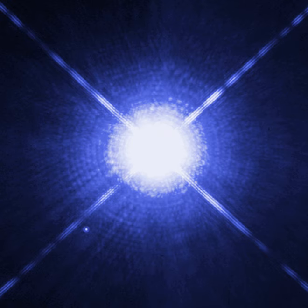A binary star is a star system consisting of two stars orbiting around their common barycenter. Systems of two or more stars are called multiple star systems. These systems, especially when more distant, often appear to the unaided eye as a single point of light, and are then revealed as multiple by other means.